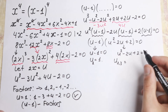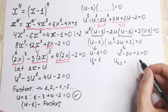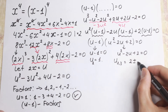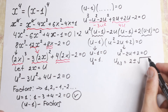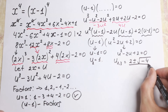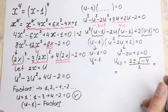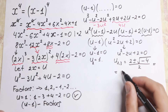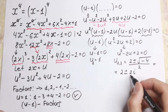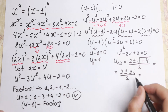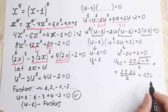Using the quadratic formula with b equal to minus 2: u equals 2 plus or minus the square root of (4 minus 8) all over 2. That gives us a negative under the square root, so we have complex roots: 2 plus or minus 2i over 2, which simplifies to 1 plus or minus i.